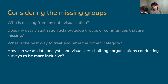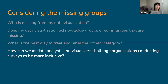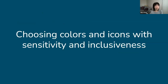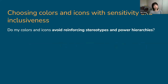One last question when thinking about who is missing from our data visualizations is: how can we as data analysts and visualizers challenge organizations conducting surveys to be more inclusive? Just because it might be harder to obtain data about certain groups doesn't mean we shouldn't still try to better understand their lives. Now let's talk about choosing colors and icons with sensitivity and inclusiveness. The main question is: do my colors and icons avoid reinforcing stereotypes and power hierarchies?